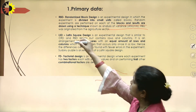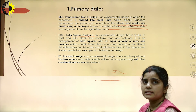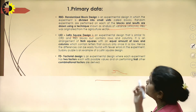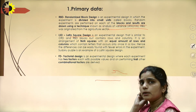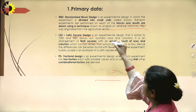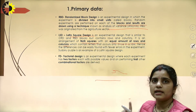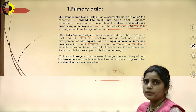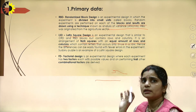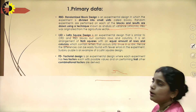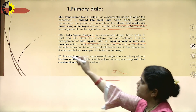The next one is Latin Square Design (LSD). It is an experimental design similar to CRD and RBD, but it contains rows and columns. It is an arrangement of N×N squares which contain an equal number of rows and columns, and each letter occurs only once in a row. The difference can be easily found with fewer errors in this method. A common real-life example of this design is the Sudoku puzzle.